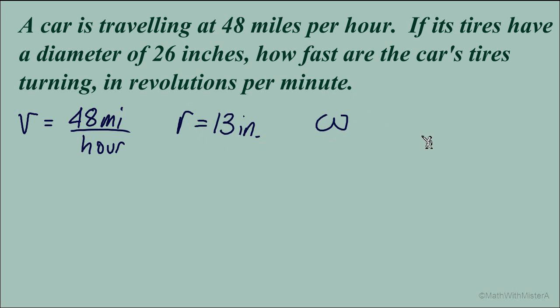We do have an equation to express the relationship between velocity, radius, and rotational velocity. The velocity is equal to the radius times the rotational velocity. If we solve this equation for omega, divide both sides by r, here's the equation we can use to solve this problem.